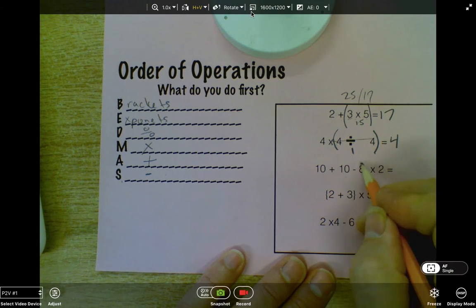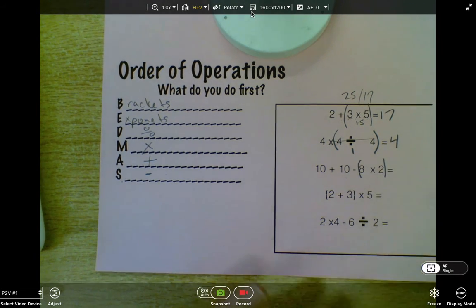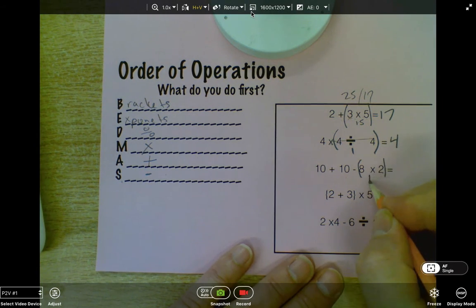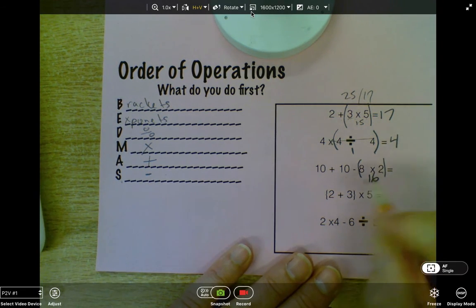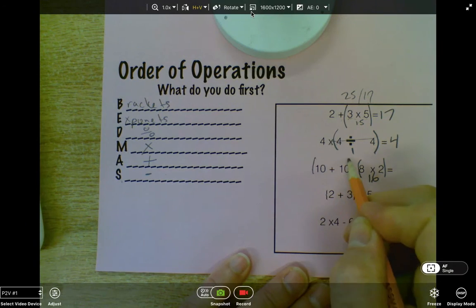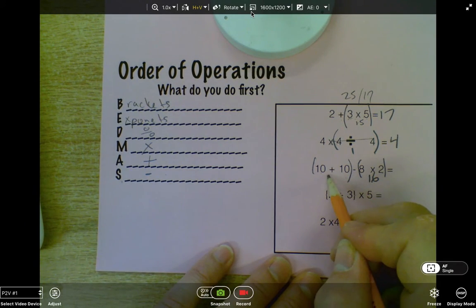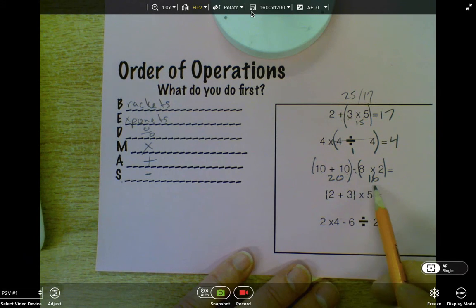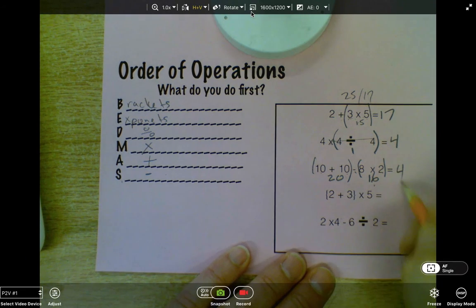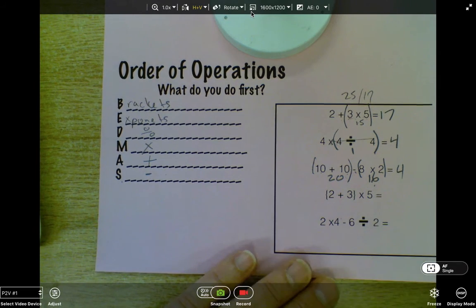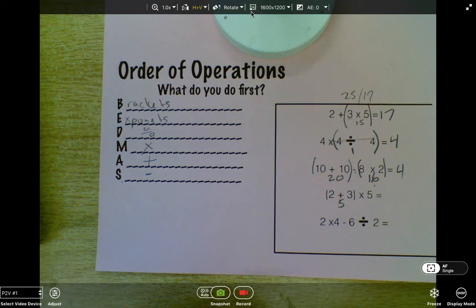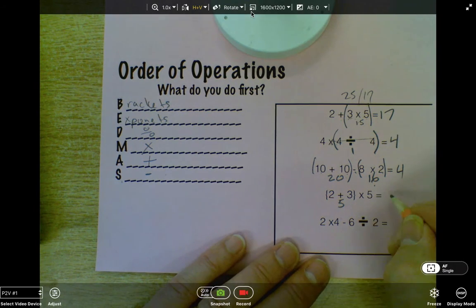And this one here, I've got multiplication. It ranks the highest. So I do that first. Eight times two is 16. Then I do the plus. So this is now ranking next in line. Ten plus ten is 20. Now I do 20 take away 16, and that will give me an answer. Here I've got brackets already, two plus three, so that is five. Then times five equals 25.